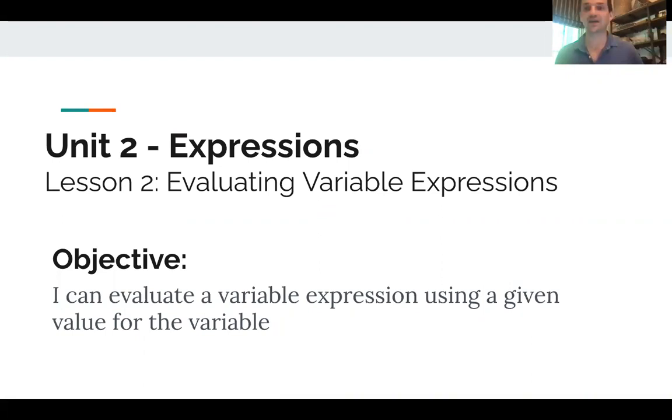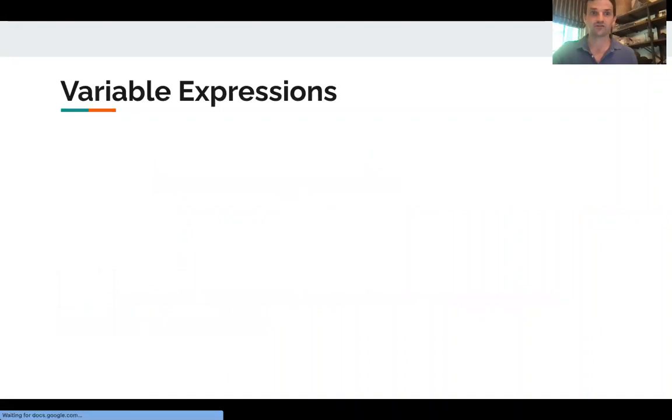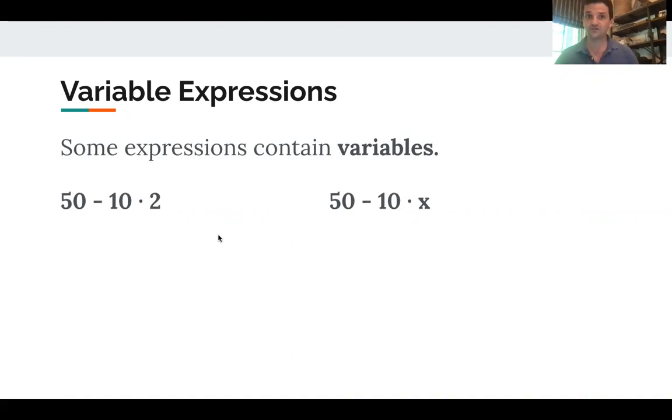So in our last lesson we just looked at numerical expressions, like the one on the left, 50 minus 10 times 2. We can evaluate that using the order of operations: 10 times 2 is 20, and 50 minus 20 is 30.